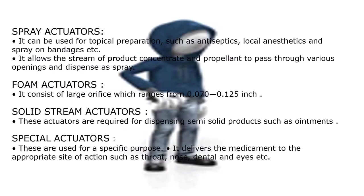Spray actuator can be used for topical preparations such as antiseptics, local anesthetics, and spray-on bandages. It allows the stream of product concentrate and propellant to pass through various openings and be dispensed as spray. Foam actuator consists of a large orifice ranging from 0.070 to 0.125 inch. Solid stream actuators are required for dispensing semi-solid products such as ointments.